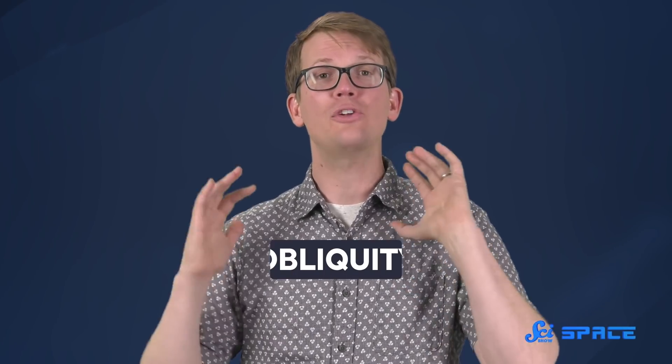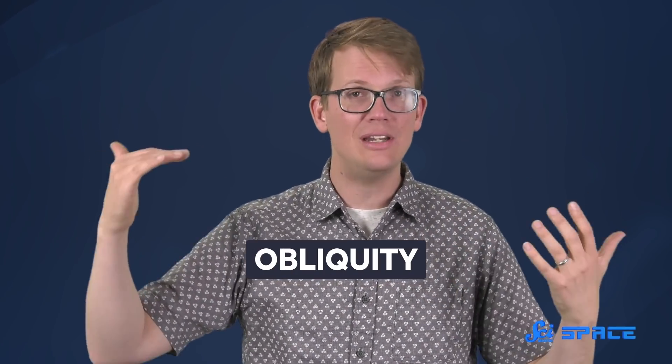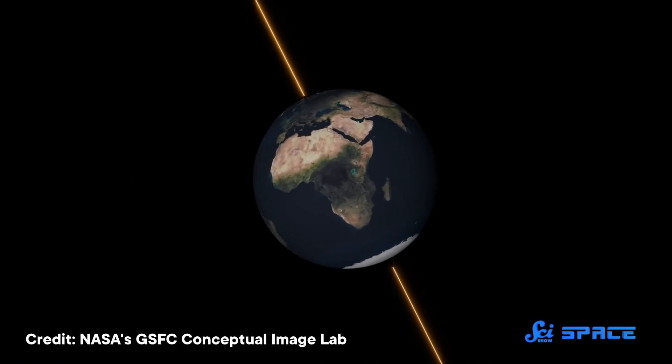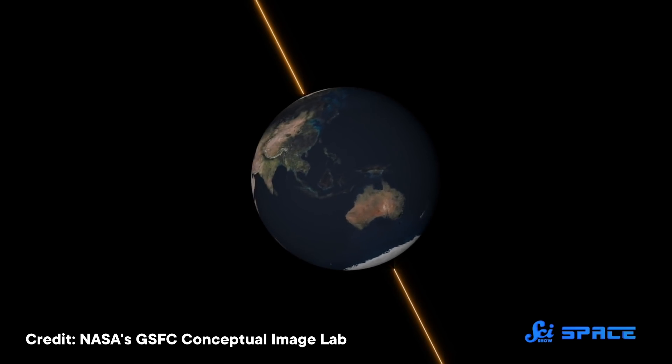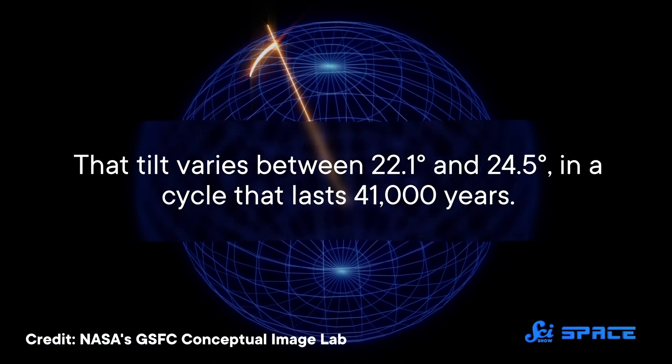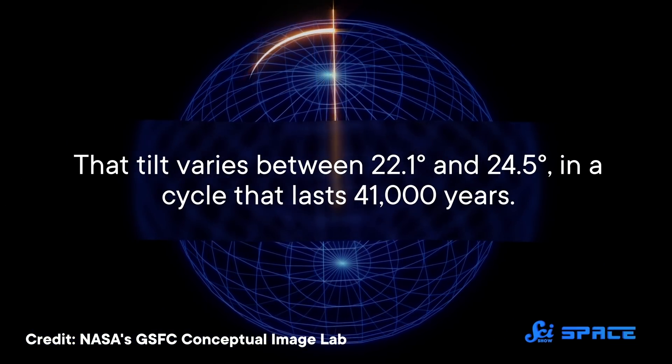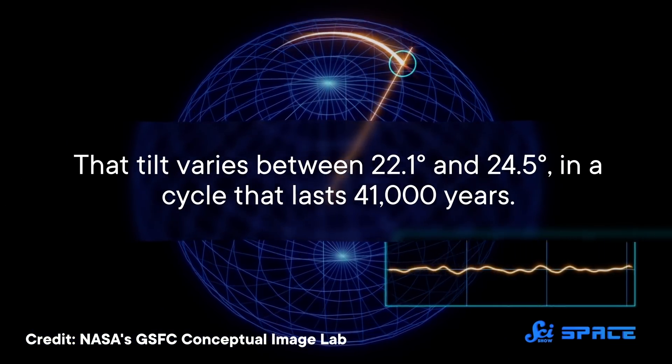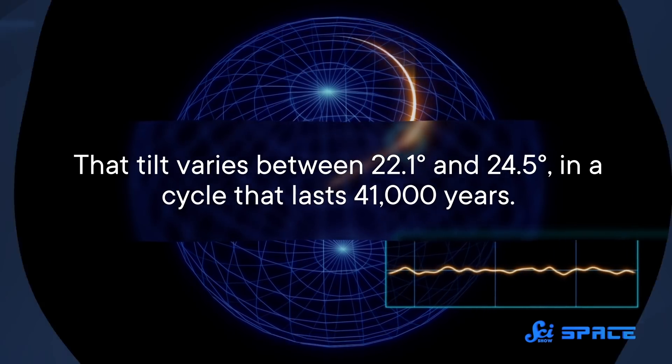The second factor is Earth's obliquity, or how tilted its axis of rotation is. Our planet's tilt creates the seasons, not its distance from the sun. The more tilted we are, the more extreme the differences become between the seasons. That tilt varies between 22.1 and 24.5 degrees, in a cycle that lasts 41,000 years.